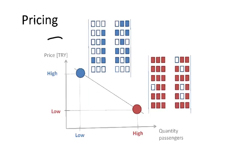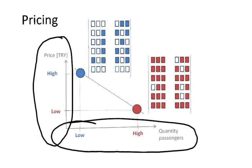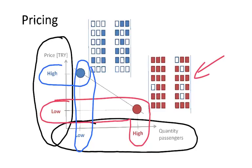On this chart, we are representing price on one axis and quantity of passengers traveling on the other. If a low price is set, then a high number of passengers are willing to travel on that flight. By contrast, if we set up a high price, then a low number of passengers will be willing to fly.